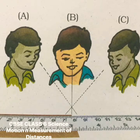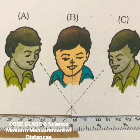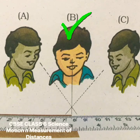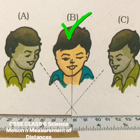The correct position of the eye is also important for taking measurement. Your eye must be exactly in front of the point where the measurement is to be taken. Position B is the correct position of the eye. Note that from position B the reading is 7.5 centimeter, whereas from positions A and C the reading may be different.